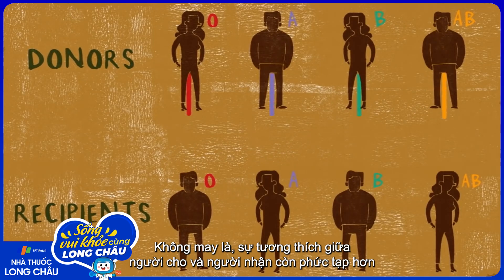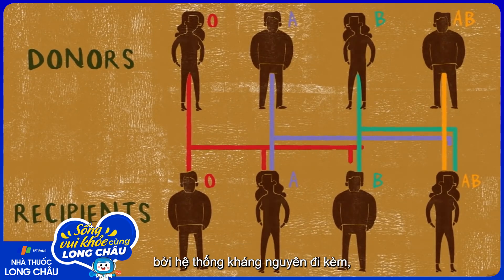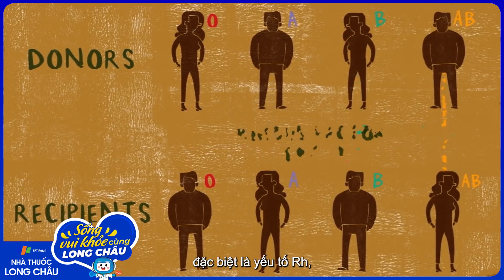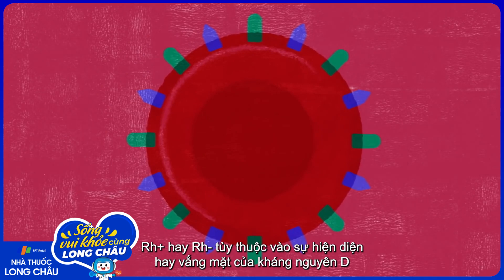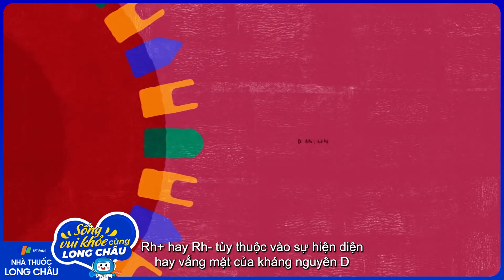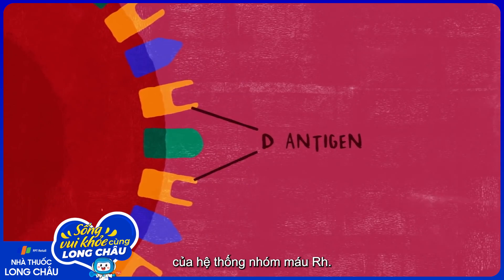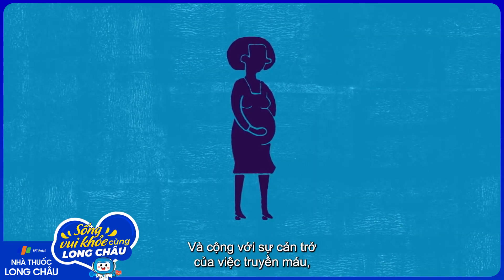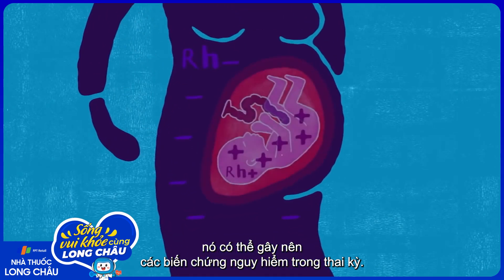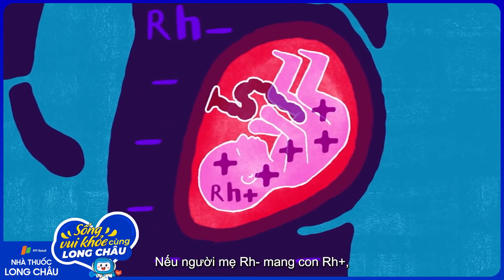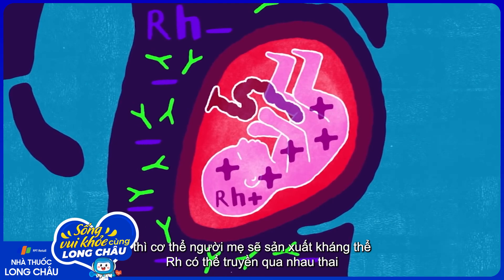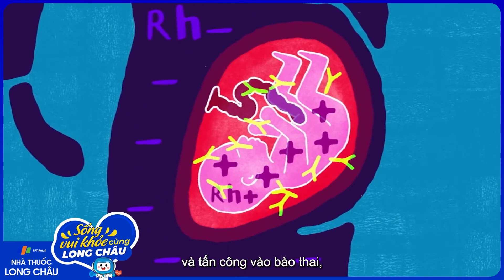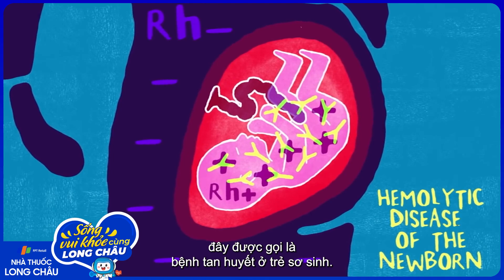Unfortunately, matching donors and recipients is a bit more complicated due to additional antigen systems, particularly the Rh factor, named after the rhesus monkeys in which it was first isolated. Rh positive or Rh negative refers to the presence or absence of the D antigen of the Rh blood group system, and in addition to impeding some blood transfusions, it can cause severe complications in pregnancy. If an Rh negative mother is carrying an Rh positive child, her body will produce Rh antibodies that may cross the placenta and attack the fetus, a condition known as hemolytic disease of the newborn.